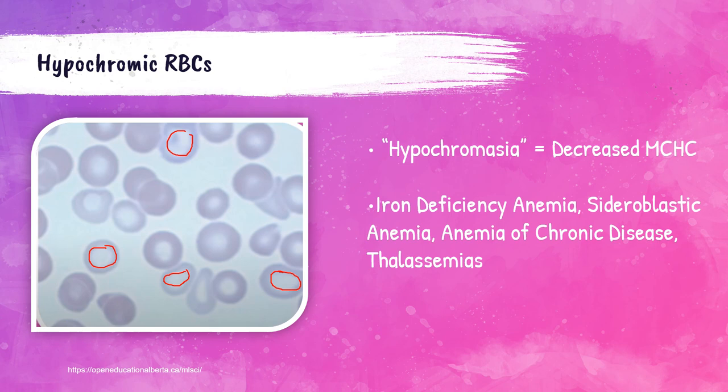You always want to use indices together with the visual assessment. You don't want to just look at the red blood cells without paying attention to the patient's CBC — you always want to report back to those red blood cell indices. Patients with iron deficiency anemia (IDA), sideroblastic anemia, anemia of chronic disease, and thalassemia can have hypochromic red blood cells. We've talked about all those different diseases briefly within this presentation.